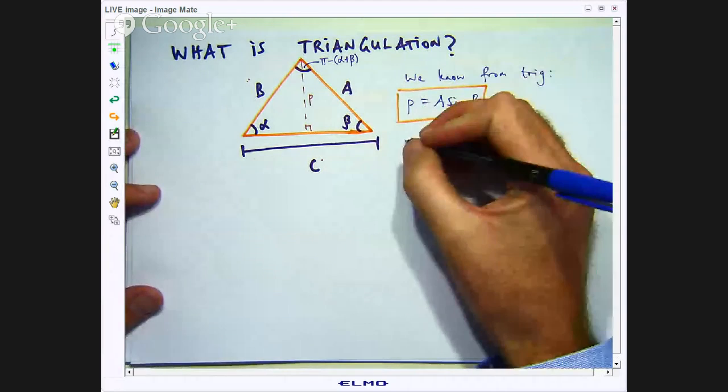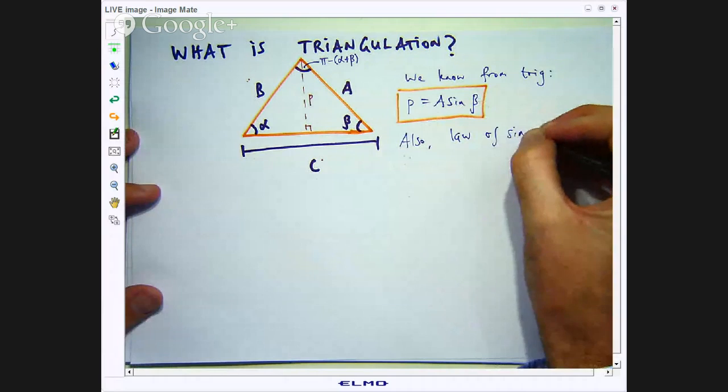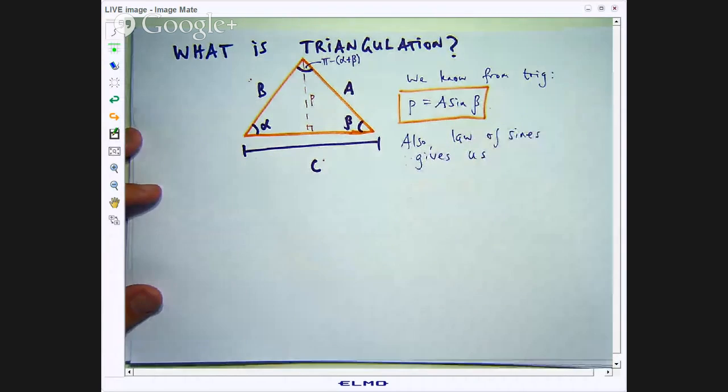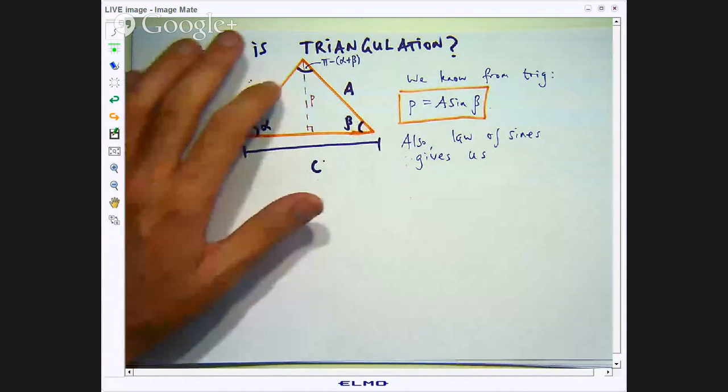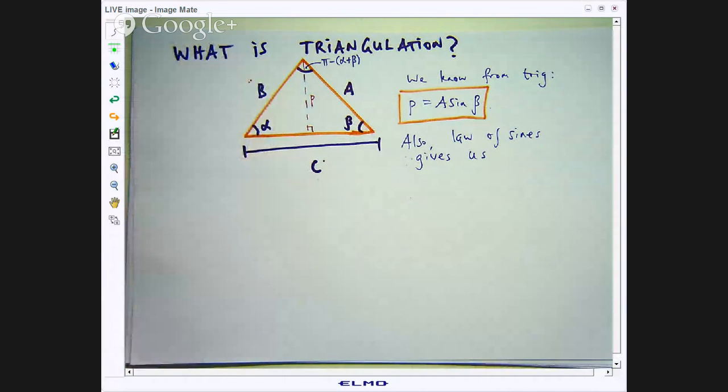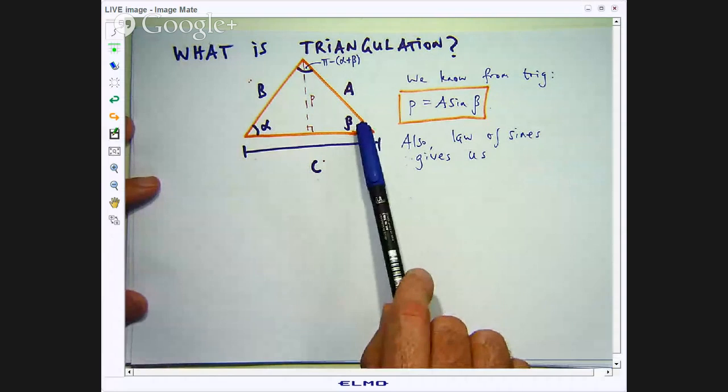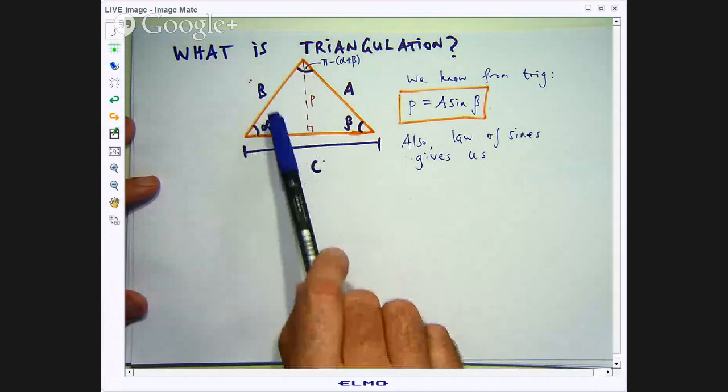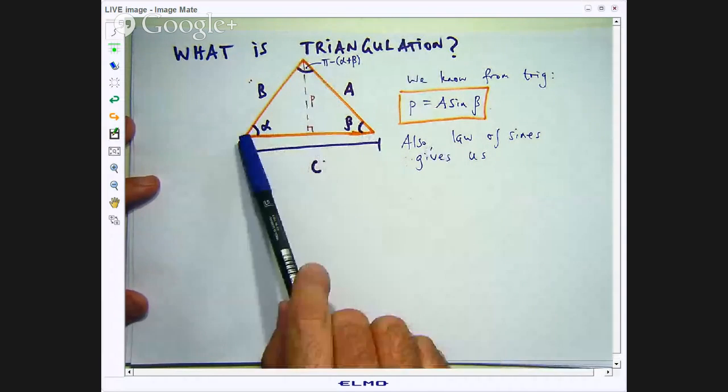Also the law of sines gives us the following. Now the law of sines basically just relates angles with the corresponding opposite sides. So the law of sines says the following. It says the sine of this angle divided by the length of the opposite side is equal to the sine of this angle divided by the length of its opposite side is equal to this angle divided by the length of its opposite side.